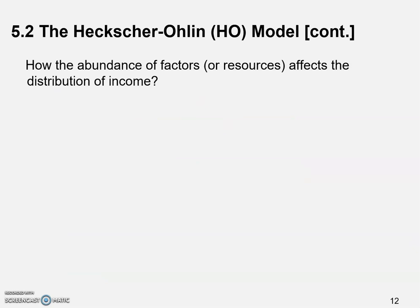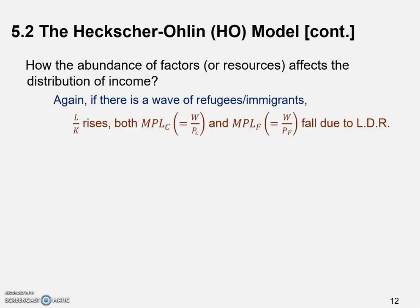Next, we're going to look at how the abundance of factors or productive resources affects the distribution of income. After understanding its influence on the two goods, the distribution of income should be relatively easy to understand. Because of the inflow of refugees or immigrants, L over K rises.